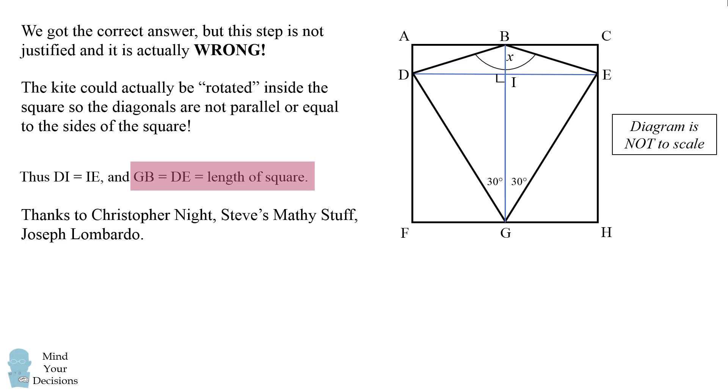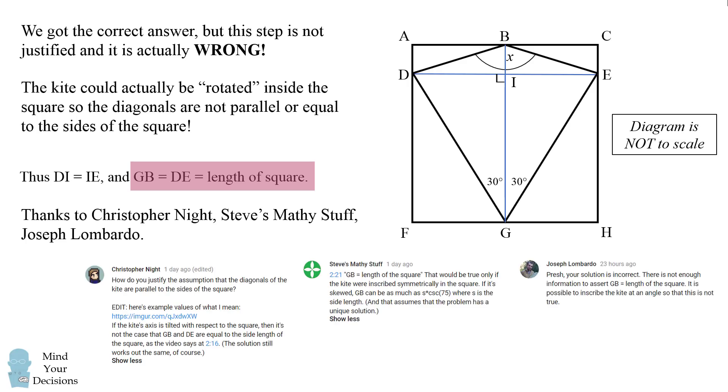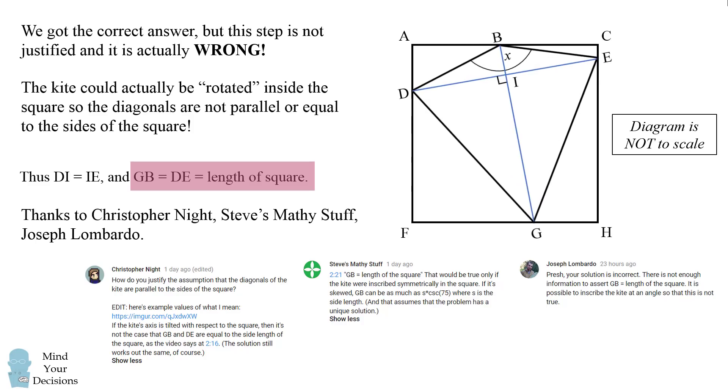I thank Christopher Knight, Steve's Mathy Stuff, and Joseph Lombardo for pointing out this particular flaw in the proof. Christopher Knight even went so far as to come up with a diagram to show how the kite could be rotated. So imagine the kite is actually rotated in the square like this.